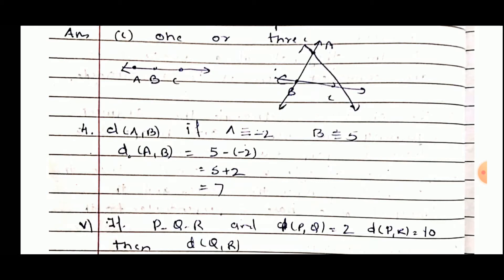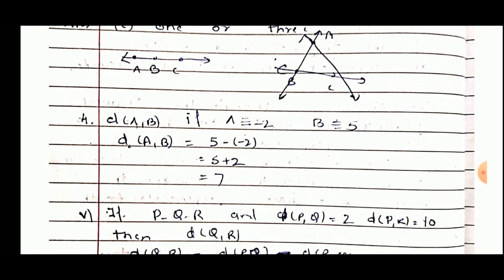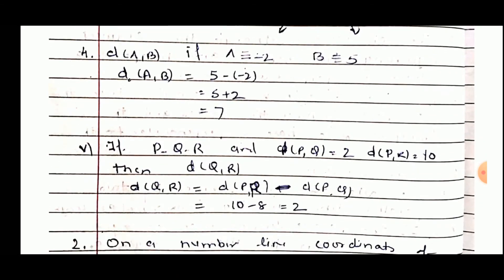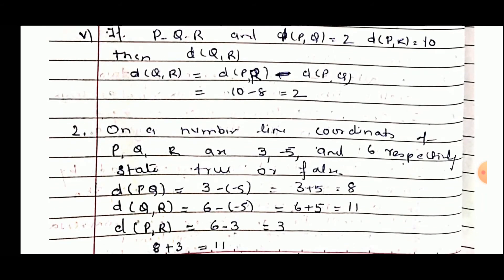Find distance AB if A equals minus 2 and B equals 5. Distance AB equals 5 minus (minus 2), that is 5 plus 2, equal to 7. If Q lies between P and R, and distance PQ equals 2 and PR equals 10, then find QR. Using the betweenness relation: distance QR equals distance PR minus distance PQ, so 10 minus 2 equals 8.